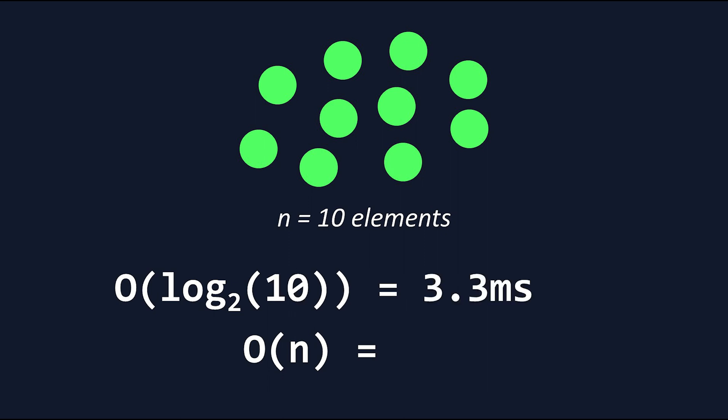O(log₂(n)) is just log base 2 of 10, which comes out at 3.3 milliseconds, and O(n) is just 10 milliseconds. As you can see, with 10 elements, the algorithm with O(log₂(n)) is 3 times faster.